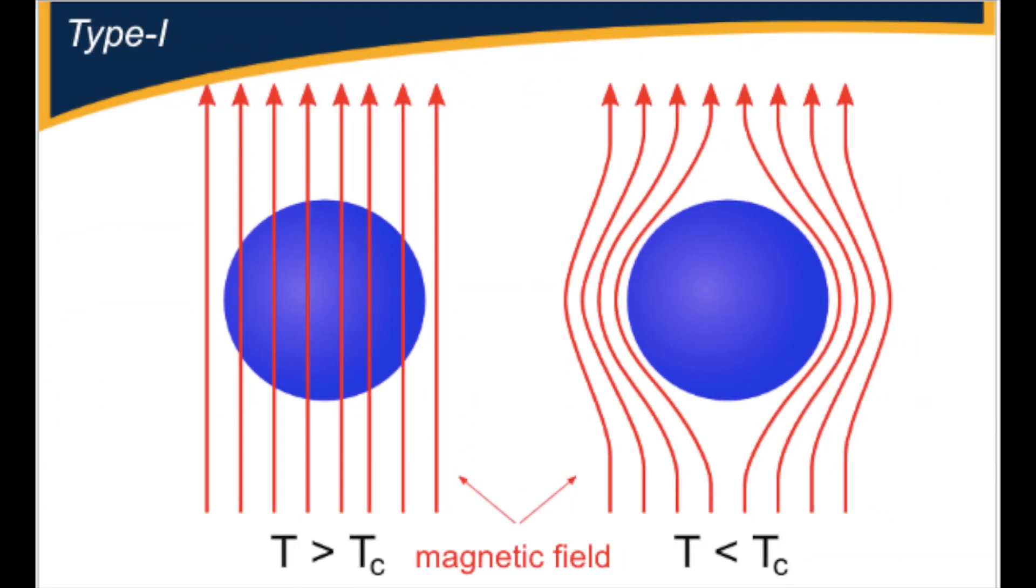There are two types of superconductors, type 1 and type 2. Type 1 superconductors exhibit perfect diamagnetism, which means that no magnetic field can exist inside it. It will create a magnetic field in the opposite direction as the external field, which creates opposing magnetic poles and magnetic levitation.